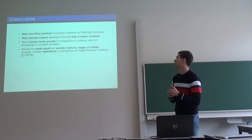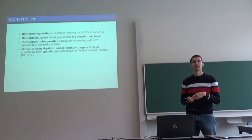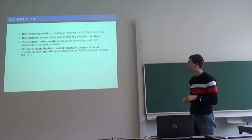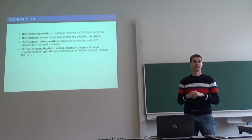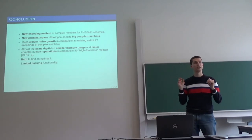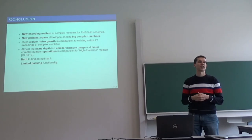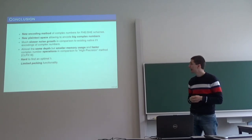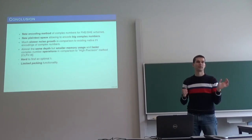So to sum everything up, we essentially proposed a new encoding method, constructed a new plaintext space for this encoding method, constructed a new scheme, which also enjoys slower noise growth, and our new scheme demonstrated that we can achieve almost the same depth as the state of the art in the field. But there are, of course, some drawbacks. The first one is really hard to find optimal b, this number b, because we have to find the factorization of very large generalized Fermat numbers, and due to the same problem, we can't also pack information to one plaintext. We can't encode several data values into one plaintext.